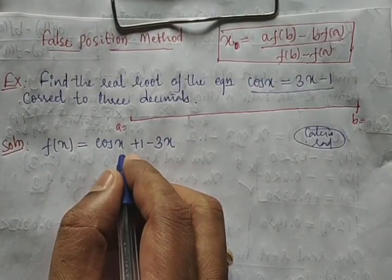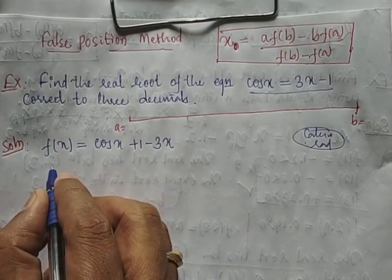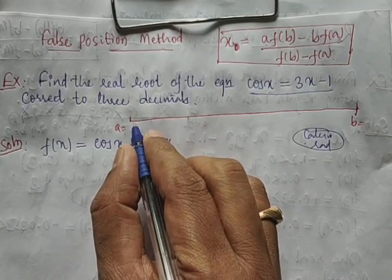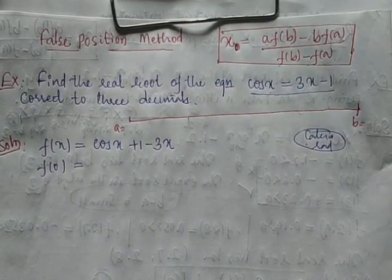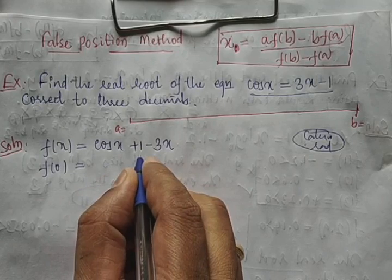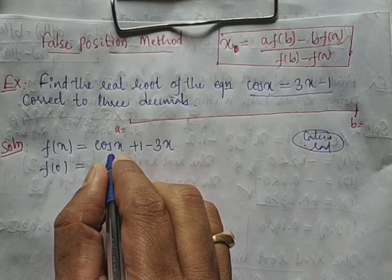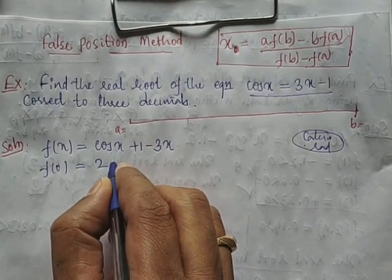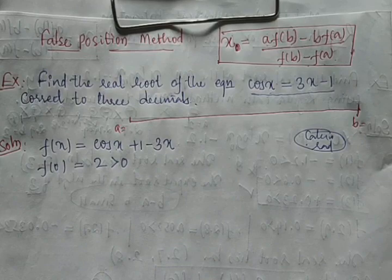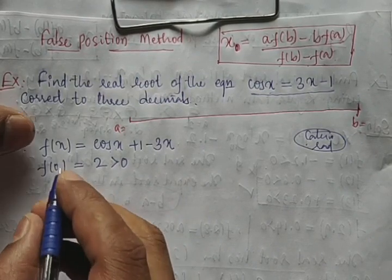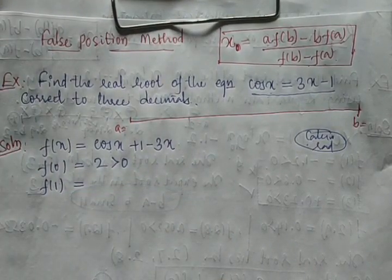We take f(x) = cos x + 1 − 3x and trace where the root lies. Starting with x = 0: cos(0) + 1 − 3(0) = 1 + 1 = 2. The value is +2, which is positive.